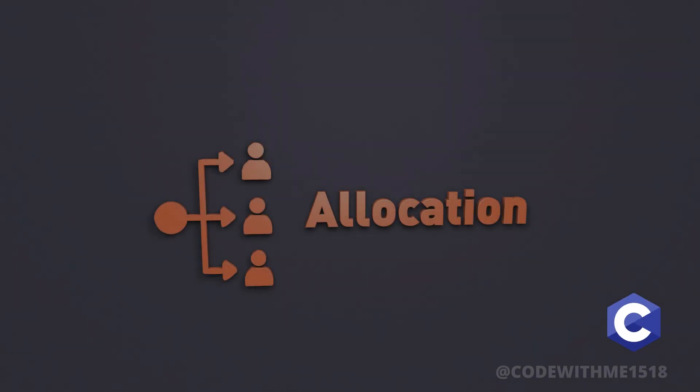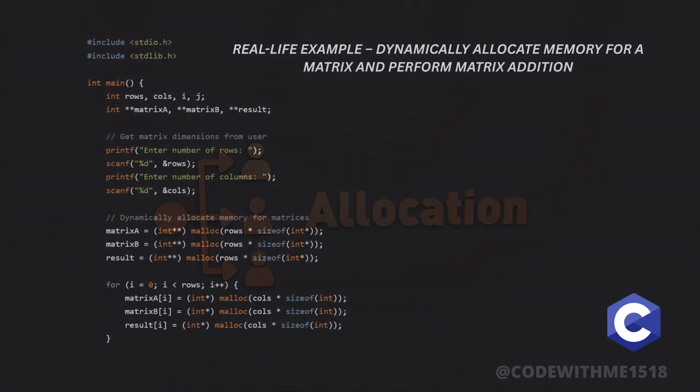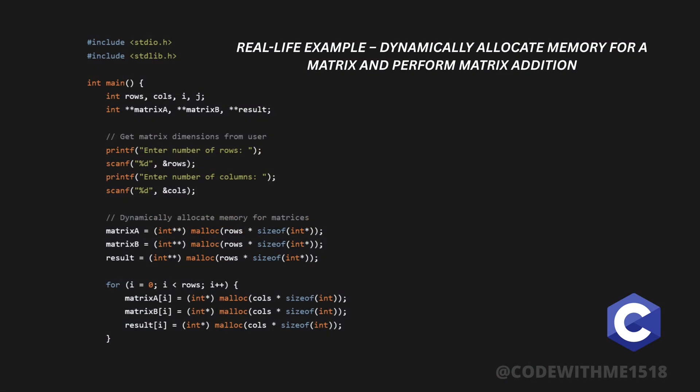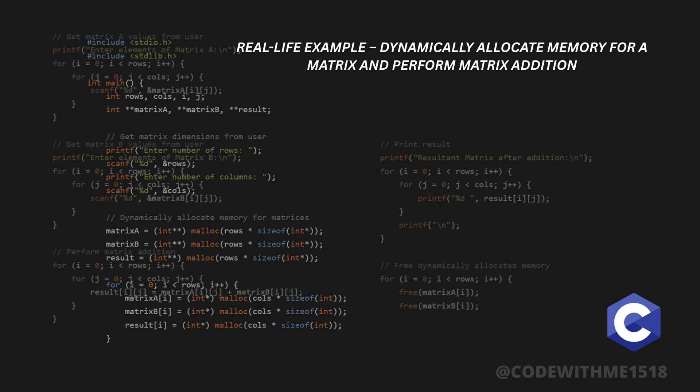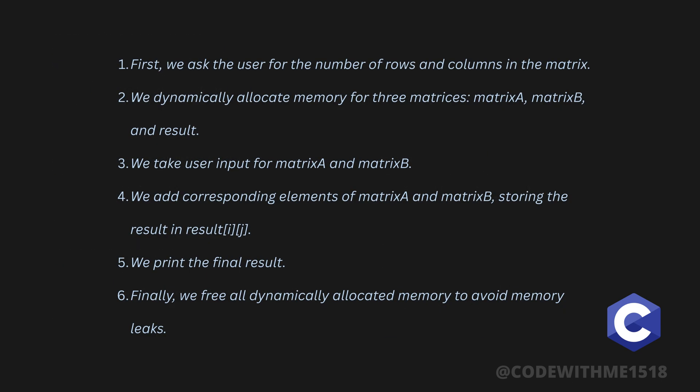Now, let's apply what we've learned with a real-life example. We'll write a program to dynamically allocate memory for a matrix and perform matrix addition. Here's the code. How does this program work? First, we ask the user for the number of rows and columns in the matrix. We dynamically allocate memory for three matrices: matrix A, matrix B, and result. We take user input for matrix A and matrix B. We add corresponding elements of matrix A and matrix B, storing the result. We print the final result. Finally, we free all dynamically allocated memory to avoid memory leaks.